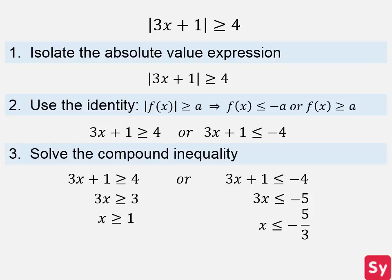Now we combine our inequalities, and we get x is less than or equal to negative 5 thirds, or x is greater than or equal to 1.